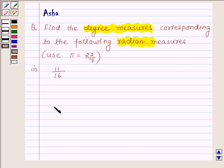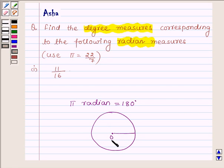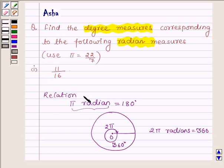So first let us learn that pi radians is equal to 180 degrees. If we have a circle with center, then it subtends at the center an angle whose radian measure is 2 pi and degree measure is 360. So we have 2 pi radians equals 360 degrees, which implies that pi radian is equal to 180 degrees. So this is the relation between radian and degree.